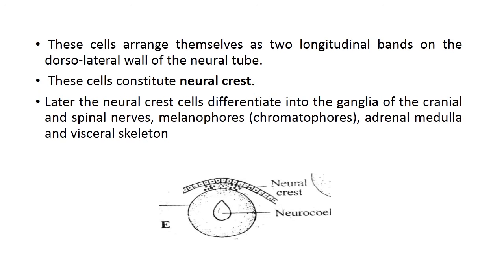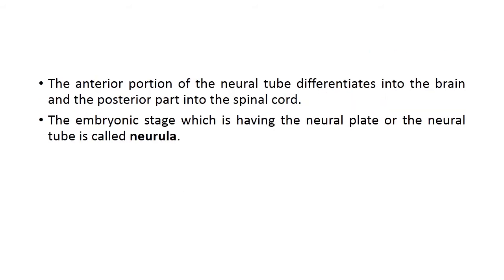These liberated cells arrange themselves as two longitudinal bands on the dorsolateral wall of the neural tube and constitute what is known as the neural crest. The neural crest cells later differentiate into the ganglia of the cranial and spinal nerves, melanophores, adrenal medulla, and visceral skeleton. They also give rise to the peripheral nervous system, including the spinal nerves.